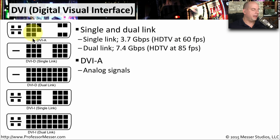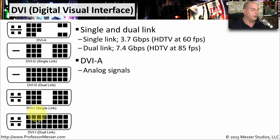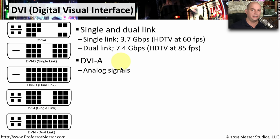As you can see, there are many different flavors of DVI interface. Some are DVI-A, others are DVI-D, and others are DVI-I. DVI-A stands for analog signals. We don't generally see DVI being used for analog signals, but the specification does have an interface and a type that supports sending analog information over a DVI link.